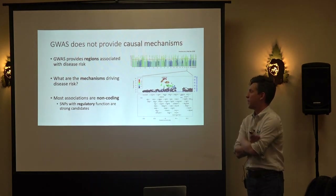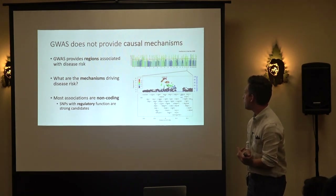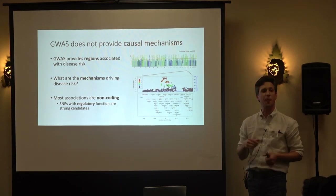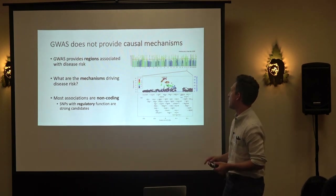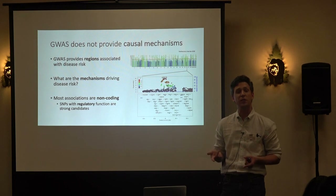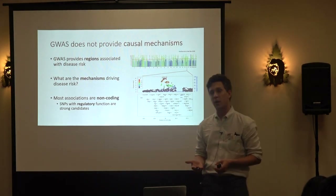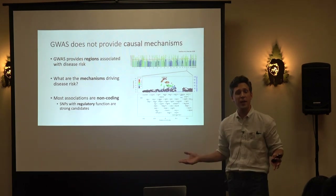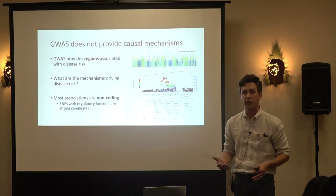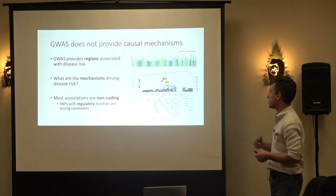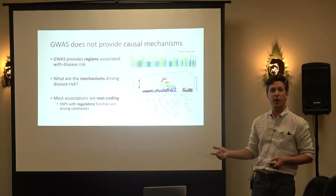GWAS has been applied to thousands of traits, maybe tens of thousands. What it does not provide are causal mechanisms. It simply gives us regions associated with disease outcome or the quantitative trait. It doesn't tell us how that trait risk is mediated, or how that quantitative trait is altered. Given the GWAS data, what are the mechanisms through which risk is imparted?